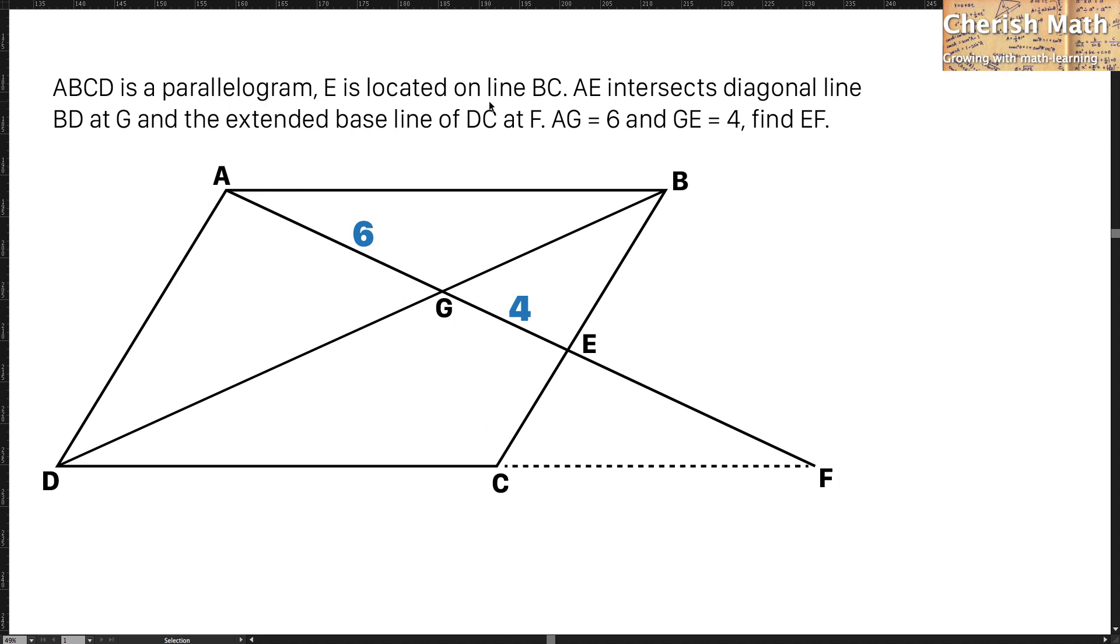E is located on line DC. AE intersects diagonal line BD at G, and the extended baseline of DC at F. AG is equal to 6, and GE is equal to 4. Find EF.